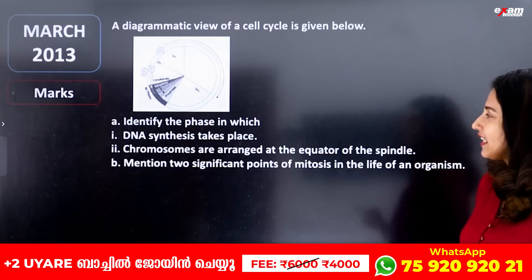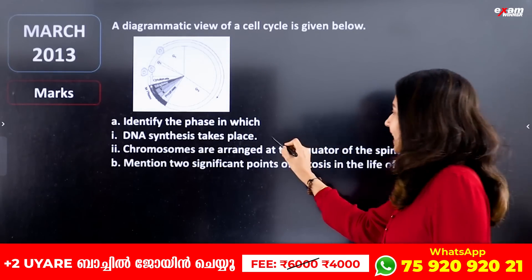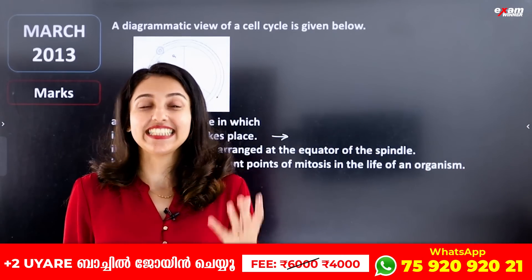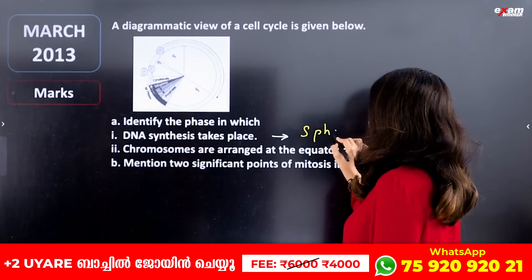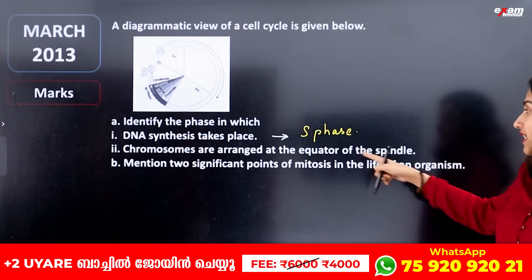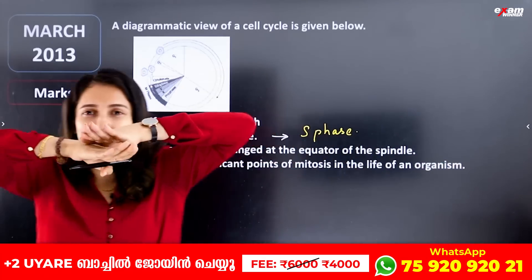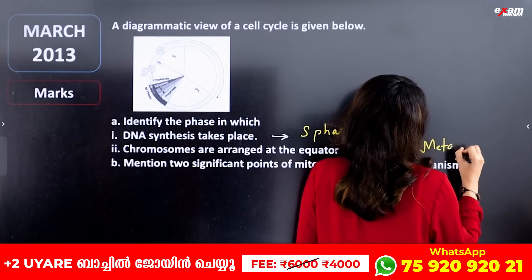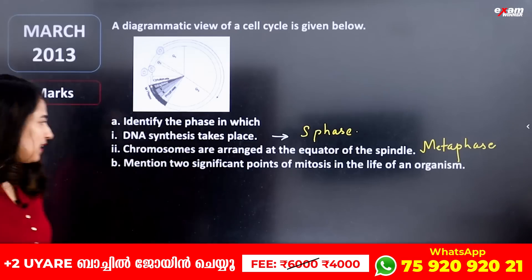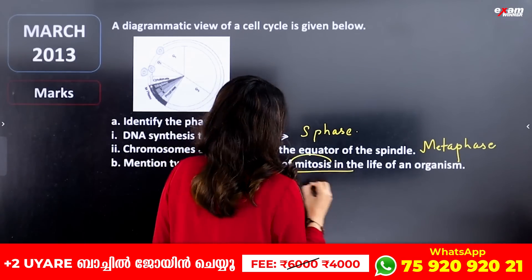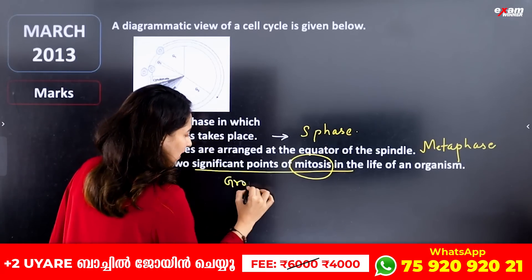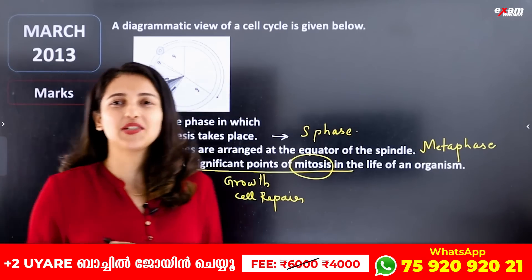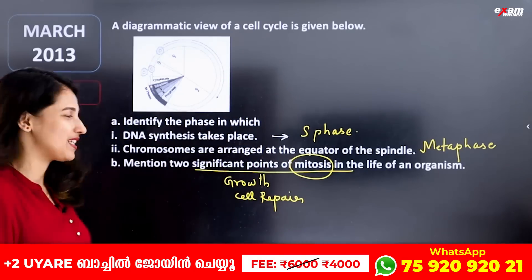We have to identify this phase. Identify the phase in which DNA synthesis takes place. DNA synthesis occurs in the S-phase (Synthesis phase). Chromosomes are arranged at the equator of the spindle — this is Metaphase. Mention two significant points of Mitosis: Mitosis is responsible for growth and cell repair, and daughter cells have identical chromosomes. It also enables continuous division of plant cells.